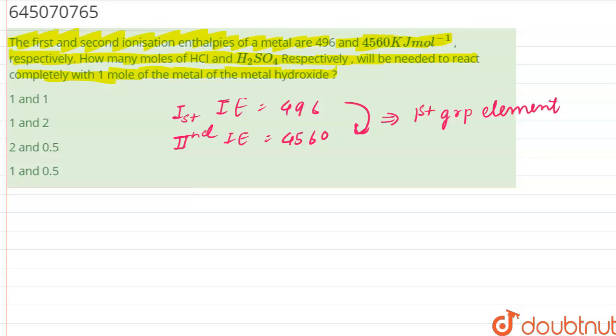Since after removal of one electron, the first group basically achieves octet. Minus one electron will achieve octet. And removing an electron from octet status will require a lot of energy. This implies that this is a first group element.